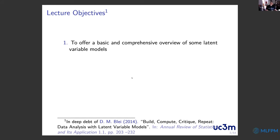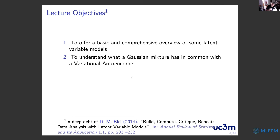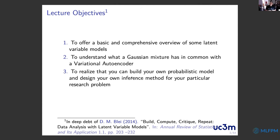The first lecture objective is to offer a basic and comprehensive overview of some latent variable models. I will put emphasis on understanding the relationship among different models — for example, what a Gaussian mixture has in common with a variational autoencoder. I also want you to know that you have the freedom to play with models: if your data doesn't fit existing models in available libraries, you can build your own probabilistic model and design your own inference method for your particular research problem.